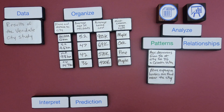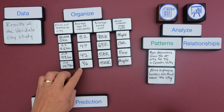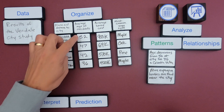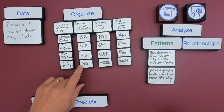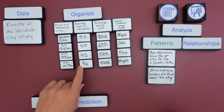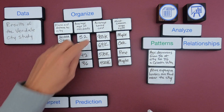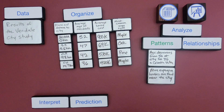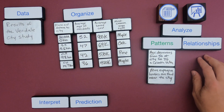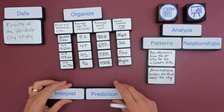Now I've organized the data. This study was looking at distance from the city as it increased, the average age of residents, the house cost, and the most common type of tree. By synthesizing and putting all of this data together, I can start to look for patterns. One pattern: the age decreased as we moved away from the city — from 52 in Veradale down to 36 in Celestial Valley. Also, the more expensive houses are located closer to the city.